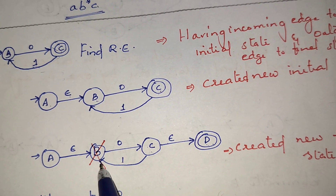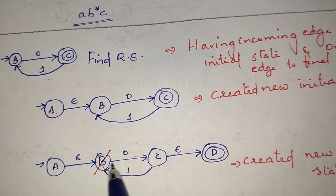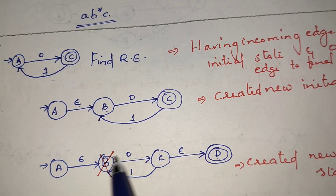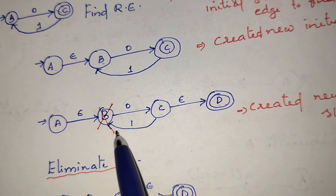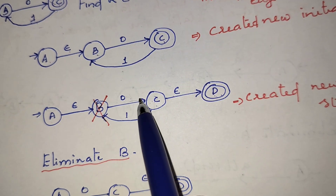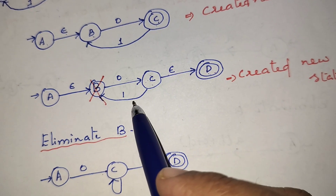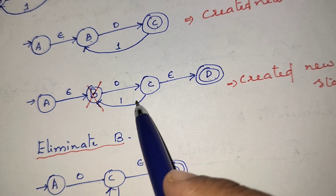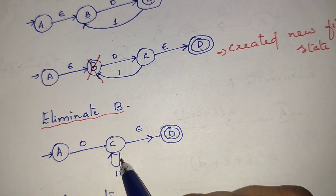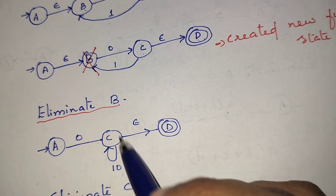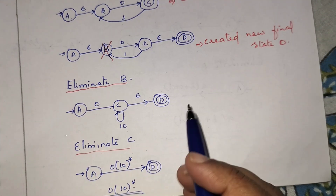Eliminating state B: the path from the new start through epsilon gives a transition of 0 (since epsilon·0 = 0), so A to C on 0. From C there is a loop: 1, 0, repeated — that is (10)*. Eliminating the remaining state, the path gives 0 followed by (10)*. So the regular expression for this problem is 0(10)*.